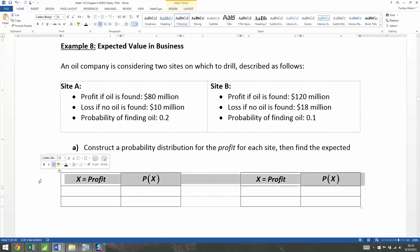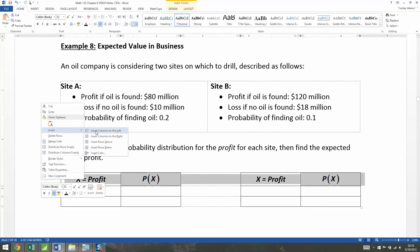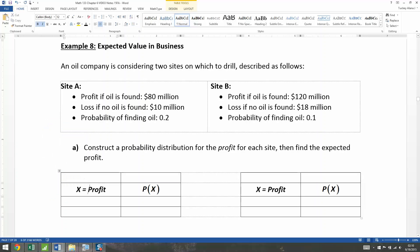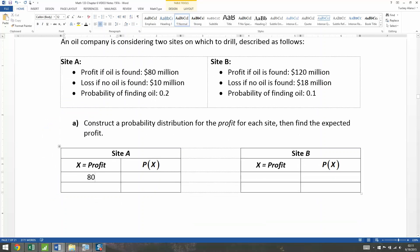So let's put in a little row right here and let's label these as site A and site B. Now the profit for site A is 80, positive 80 because it's profit. But the loss, if you find no oil is $10 million, but loss in business is negative. You're losing dollars. So it has to be a negative 10.